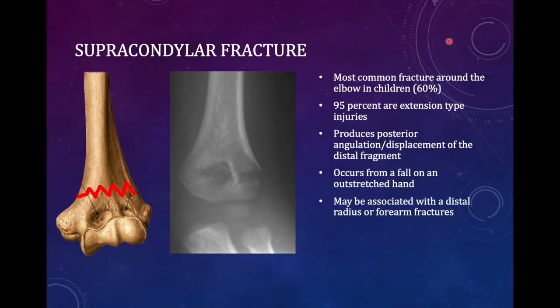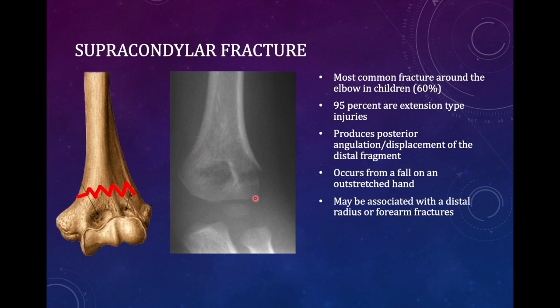Now coming to supracondylar fractures. As the name denotes, the fracture occurs above the condyle — the medial condyle and lateral condyle — so the fracture is somewhere above them. You have to be careful when diagnosing supracondylar fracture in children, because it most commonly affects children. The children's bone is not as mature radiologically — this kind of adult picture will not be seen; instead you get an immature pediatric radiograph because the ossification centers have not fused yet.